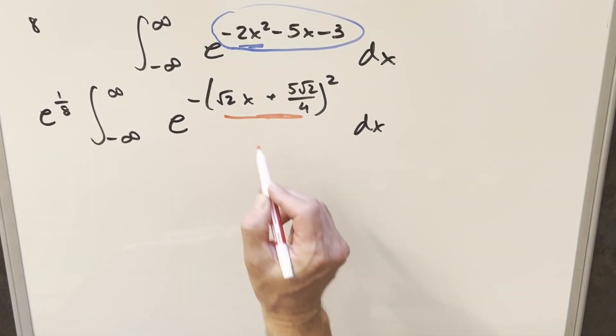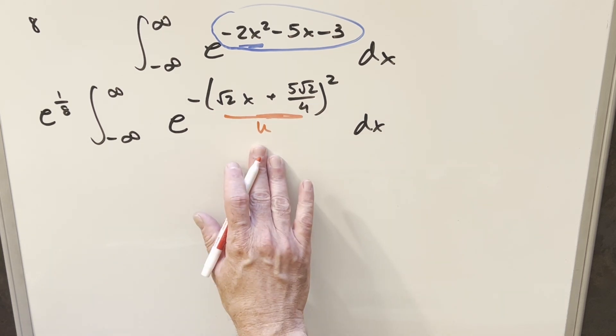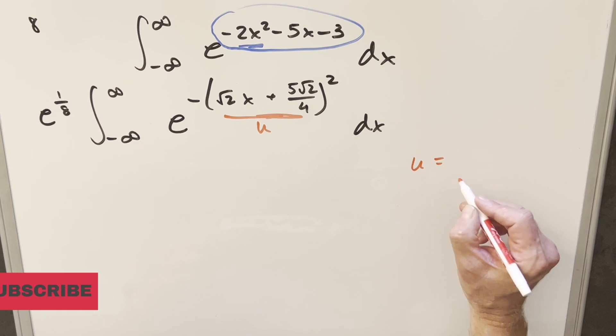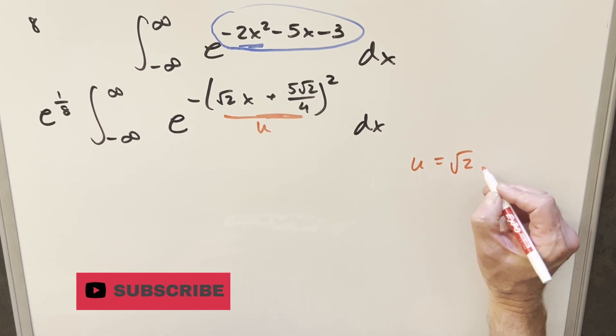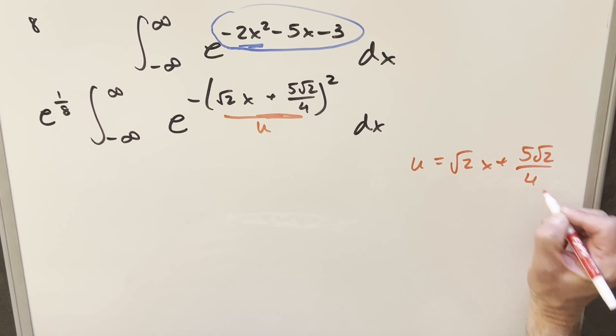And now here with the rewrite, we're in good shape for a u-substitution. Because if I just do a u-substitution here, then this is going to be perfectly in the right form for the Gaussian integral. So if I come over here, we're going to make u all this stuff, which is kind of a mess, but it's going to clean up really when we do a derivative.